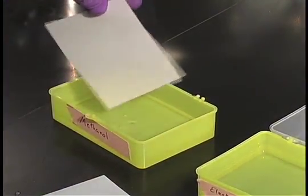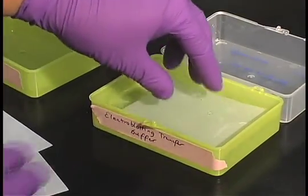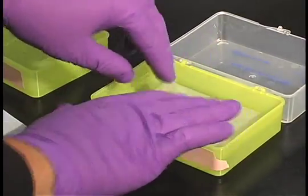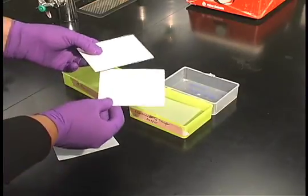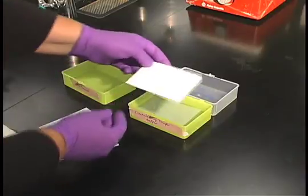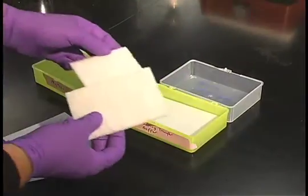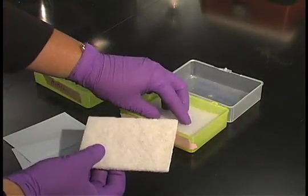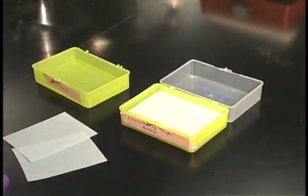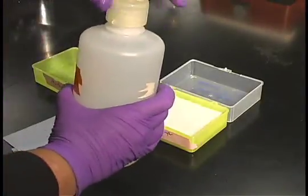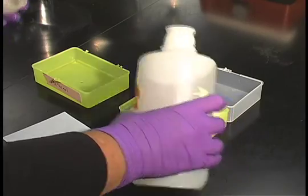Then we'll soak the paper in electroblotting transfer buffer, along with two pieces of absorbent filter paper and two fiber pads. Add more buffer if you need it to cover.